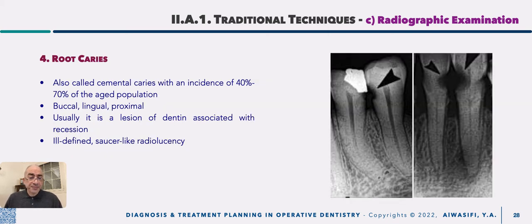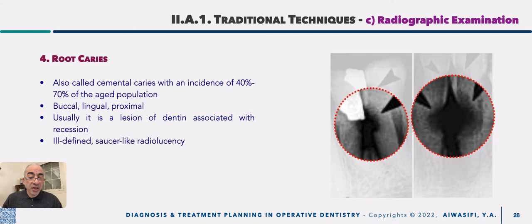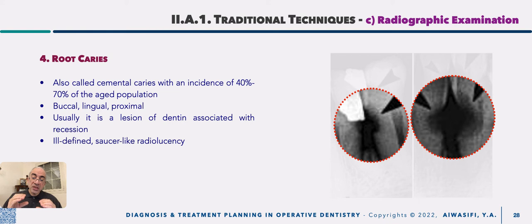Root caries, also called cemental caries, affects about 40–70% of the older geriatric population and may be buccal, lingual, or proximal. The lesion usually starts as a dentinal cervical lesion that extends to the root due to gingival recession. It appears as an ill-defined saucer-like radiolucency that extends toward the root beyond the cemento-enamel junction.